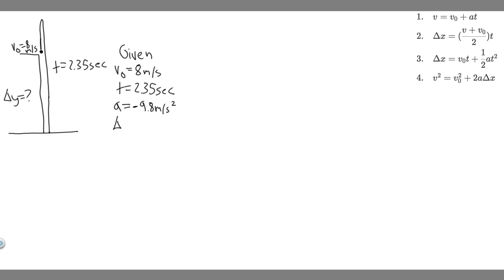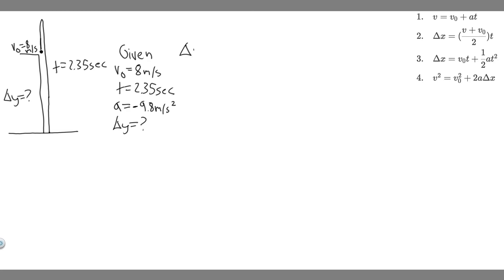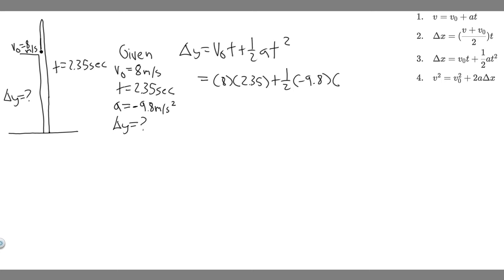Since we have three variables, we can solve for delta Y using kinematics. We have v₀, t, and a, so we'll use equation three: delta Y equals v₀ times t plus one-half at squared. Plugging in: v₀ is 8, t is 2.35, plus one-half times the acceleration, which is -9.8, multiplied by t squared, which is 2.35 squared.